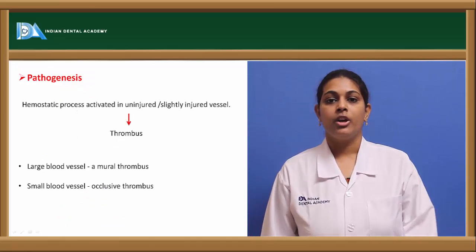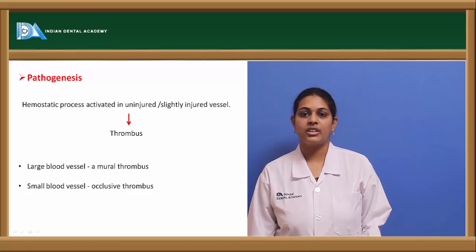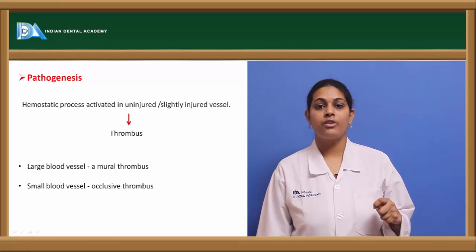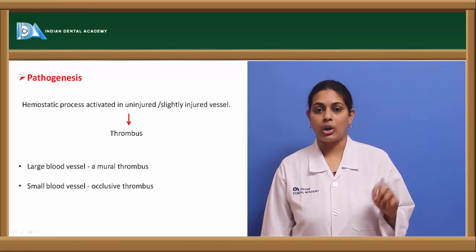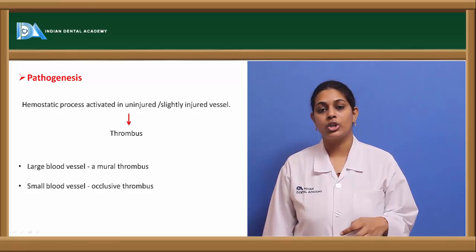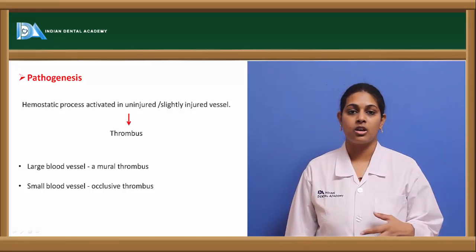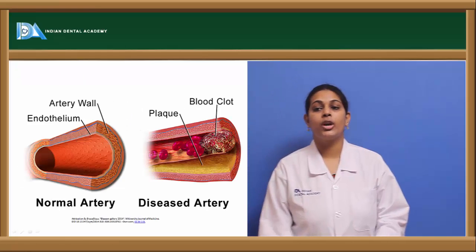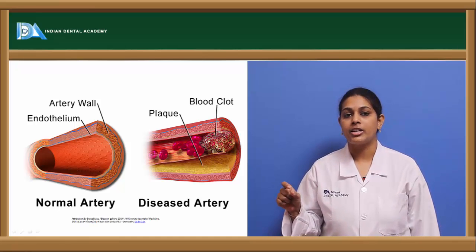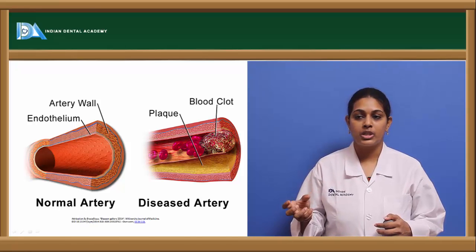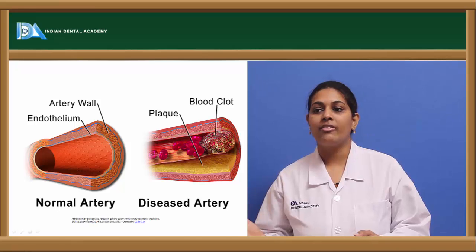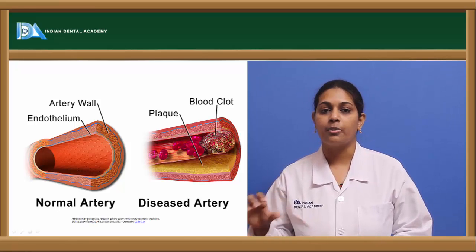In brief pathogenesis, once the hemostatic process is activated in an injured or slightly injured vessel, it may result in thrombus formation. If the thrombus is large enough to occlude a blood vessel, it is known as a mural thrombus. If it is smaller, it may cause only partial occlusion and may be carried through blood circulation. Normally, the endothelium is thinner, whereas in disease the arterial wall increases in size and a visible thrombus obstructs blood flow.